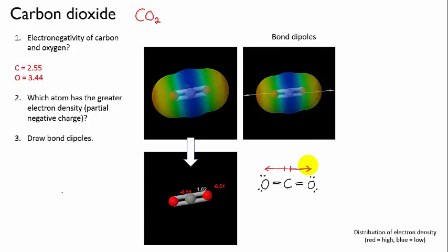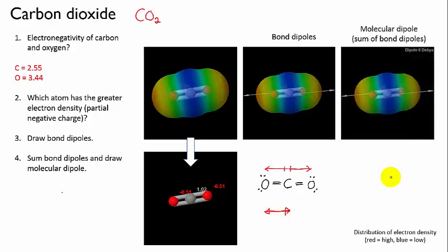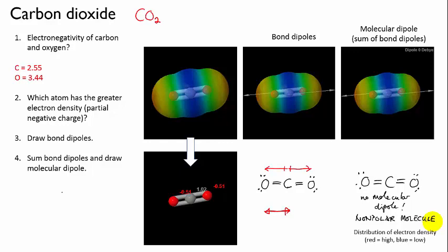And then we sum the bond dipoles to draw the molecular dipole. Now if we have two dipoles that are of equal magnitude but in exactly opposite directions, what is their sum going to be? It's going to be zero. We can show this if I translate these down here. If I now draw the second dipole with its tail touching the head of the first, it will essentially go straight back in the other direction. So the sum is going to be zero. So when you look at the molecular dipole of carbon dioxide, it actually has none. And if a molecule has no molecular dipole, we say it is a non-polar molecule. Now this is an interesting case because this molecule has polar bonds. But because of its symmetry, because the dipoles are in exactly opposite directions, it has no overall molecular dipole.